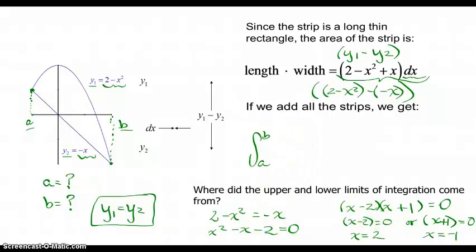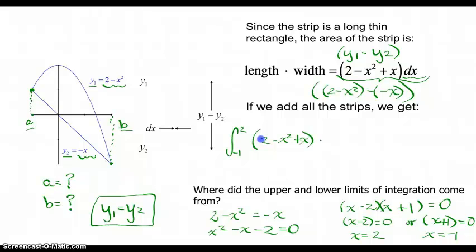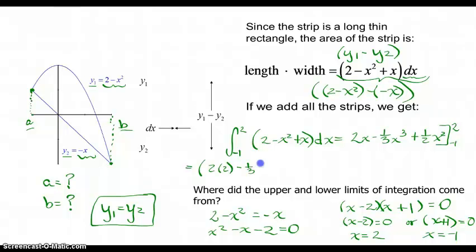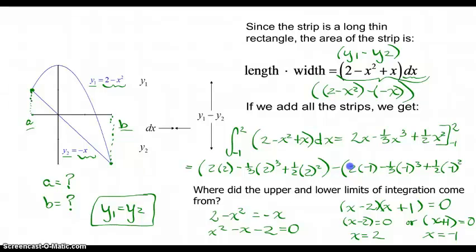Let's finish that up. We integrate from negative 1 up to positive 2 of 2 minus x squared plus x with respect to x. The process: find the antiderivative function, show it, then apply the fundamental theorem — plug in the upper limit minus the lower limit. Never simplify unless you need to use that value elsewhere. That's our answer: the area of the region in the plane. Very different from accumulated area, so pay attention to context.